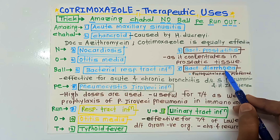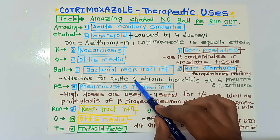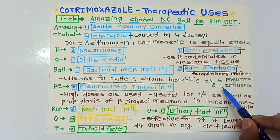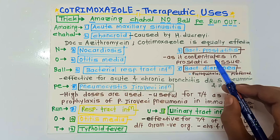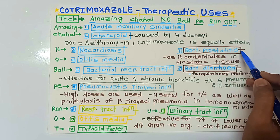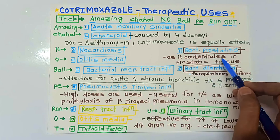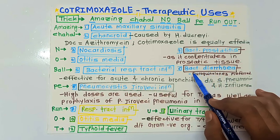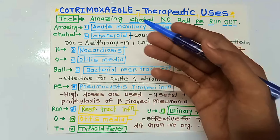O is for otitis media. Ball is for bacterial infections: bacterial respiratory tract infections, bacterial prostatitis, and bacterial diarrhea. For bacterial respiratory tract infections, it is effective for acute and chronic bronchitis due to Streptococcus pneumoniae and Haemophilus influenzae. In bacterial prostatitis, it is effective because it concentrates into the prostatic tissue.